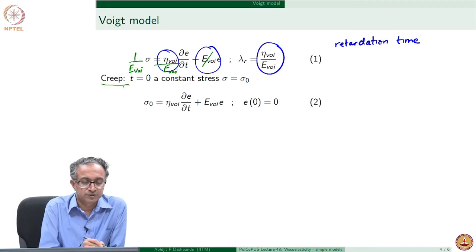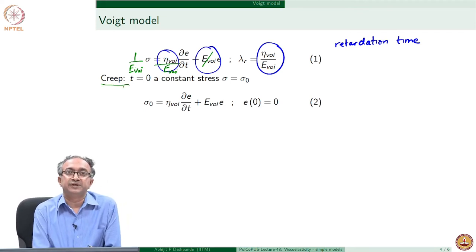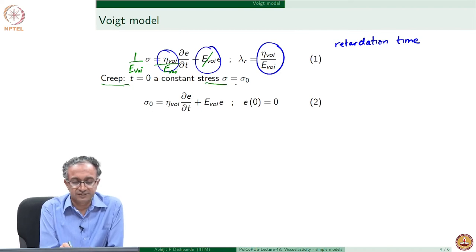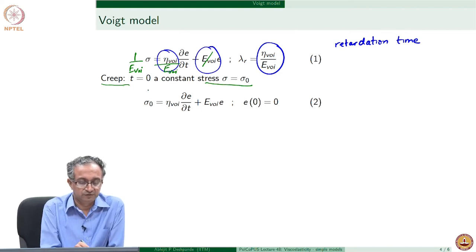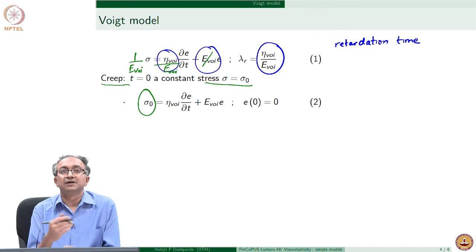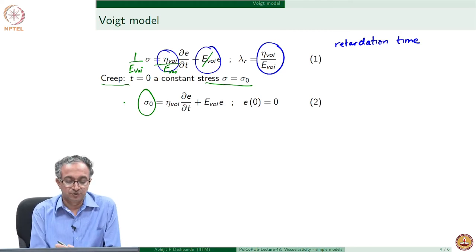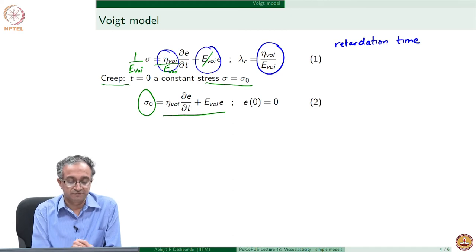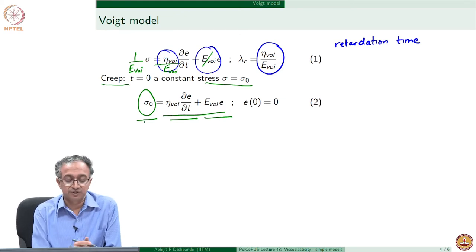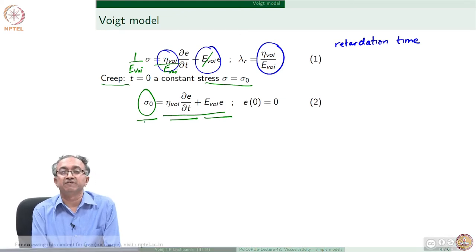Let us look at what happens to the Voigt model when a creep experiment is done. Since constant stress is applied, the stress value essentially becomes σ₀, and the creep experiment by definition measures strain. According to the Voigt model, we have an ordinary differential equation with a first-order derivative and strain itself related to a constant. The solution to this first-order ODE is an exponential function.